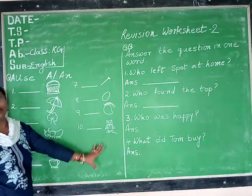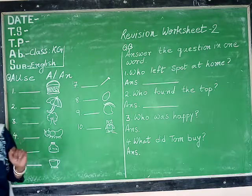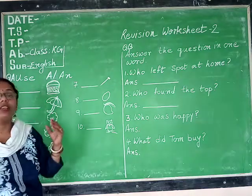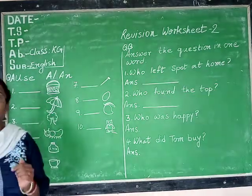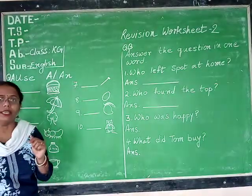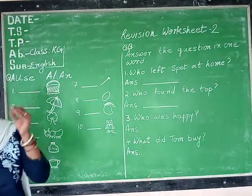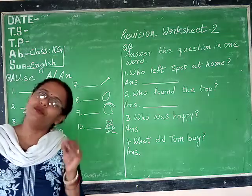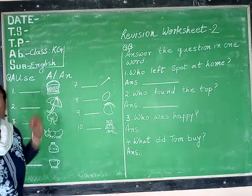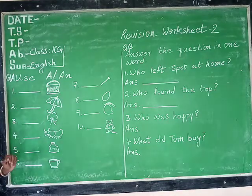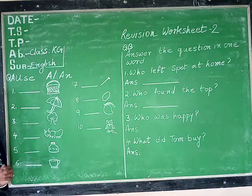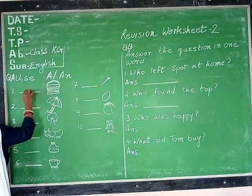Here is the picture that has been given — not two words. So what we have to do? We have to name the given picture and then identify whether the word starts with a consonant or a vowel. The first one — what is this? It is a basket. B is a consonant, so we will write 'a basket.'